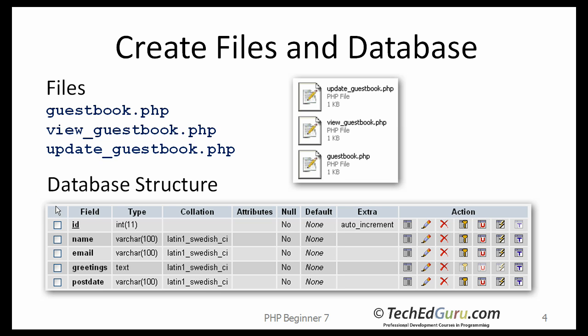This is what the database table structure is going to look like. We will create one table. We need to store name, email, and the greetings that each user would provide. We are also going to add another field called ID, a unique number, and that number will be auto-incremented — it will automatically be incremented by one from the previously saved value. We also want to store the date on which the entry was created.